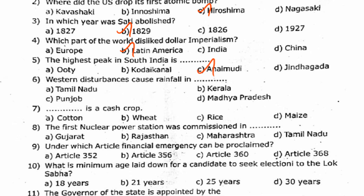Next, western disturbances cause rainfall in? Answer is option C. Next, dash is a cash crop? Answer is option A. Next, the first nuclear power station was commissioned in? Answer is option C.